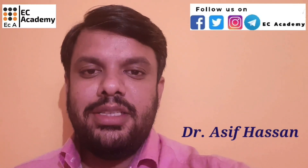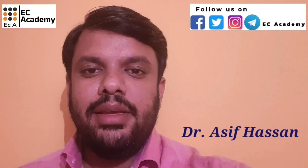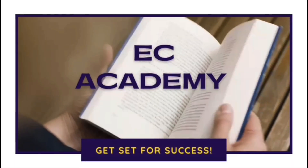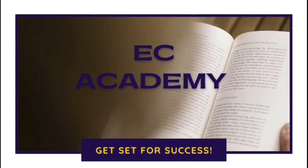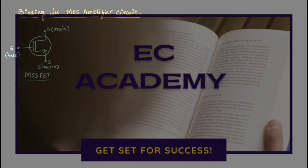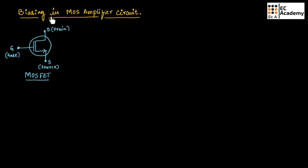Hello friends, welcome to ESEA Academy. In this lecture, let us understand biasing in MOS amplifier circuit. This is the symbol of MOSFET, which is metal oxide semiconductor field effect transistor. MOSFET is also used as an amplifier.